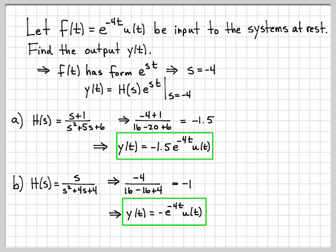That concludes this example. If you are working with a linear system described by a differential equation and your input has the form e to the st, you could solve for the impulse response and then convolve it with the input to find the zero-state response. Or you could use this method where you solve for the transfer function and use this equation to write down the output very easily.